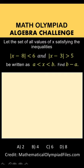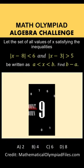Let the set of all values of x satisfying the inequalities |x - 8| < 6 and |x - 3| > 5 be written as a < x < b. Find b - a. Here are the options. Thanks to mathematicalolympiadfiles.com for this problem. You can pause the video and see if you can solve it.